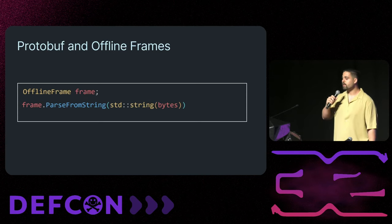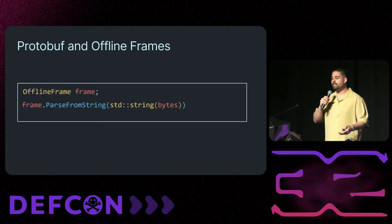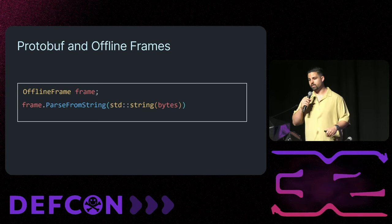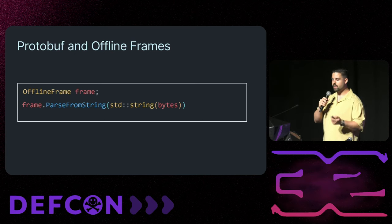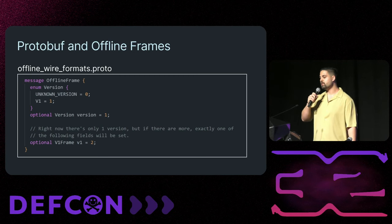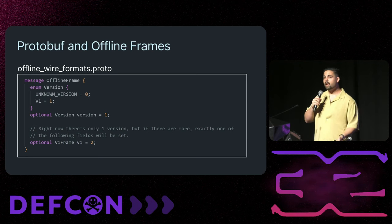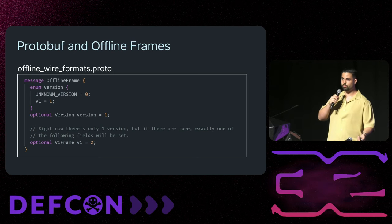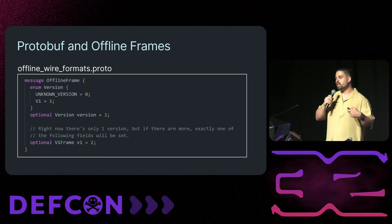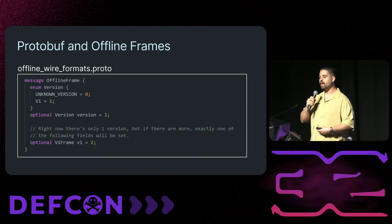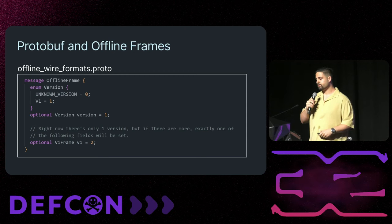Deeper inside the read function, we understood that packets are of a type called OfflineFrame — each received packet was parsed into an OfflineFrame object. This class was generated by protobuf. Here we can see the protobuf definition of OfflineFrame: using protobuf, this proto file is compiled into C++ files that define the OfflineFrame and provide functions to serialize it to bytes and deserialize it from bytes. OfflineFrame is the base type for almost all packet types we'll discuss, so from now on we'll mostly call them packets.